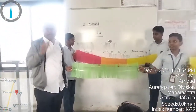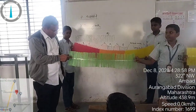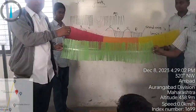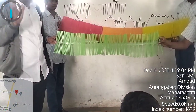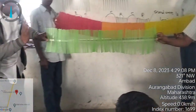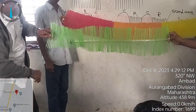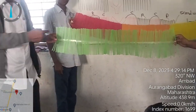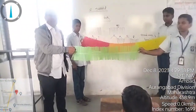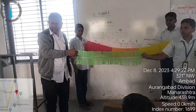Sound waves are longitudinal waves. This is a straw model, and here the straws are fixed at a specific distance. Suppose this is a wave — it is going there and coming back. In a sound wave, the sound particles vibrate along with the direction of wave propagation.